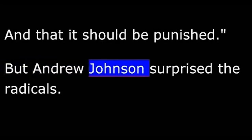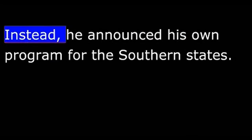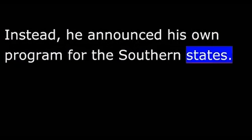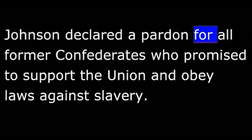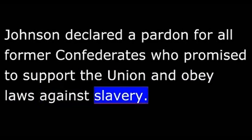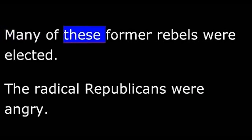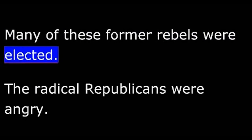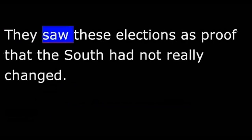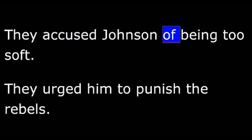But Andrew Johnson surprised the radicals. He did not call the special session of Congress. Johnson declared a pardon for all former Confederates who promised to support the Union and obey laws against slavery. Then he permitted former officials of the Confederacy to run for office in their state's new elections. Many of these former rebels were elected. The radical Republicans were angry. They saw these elections as proof that the South had not really changed. They accused Johnson of being too soft and urged him to punish the rebels.